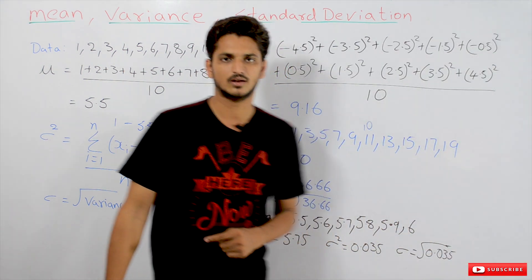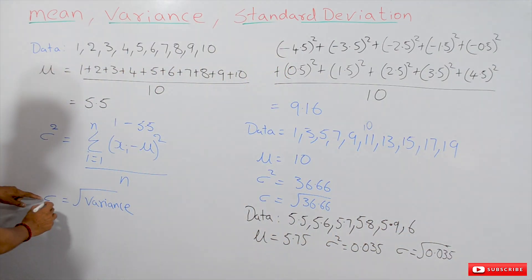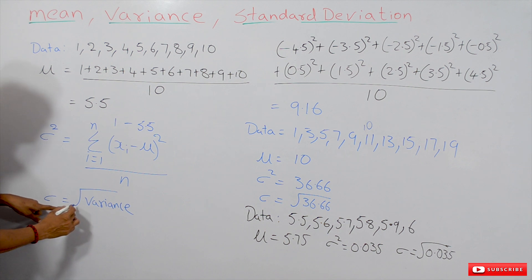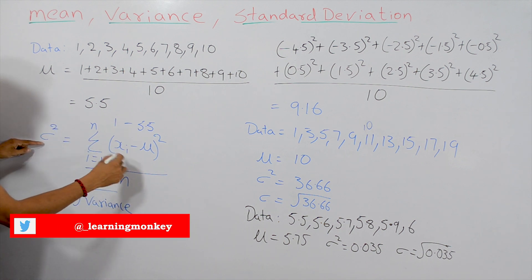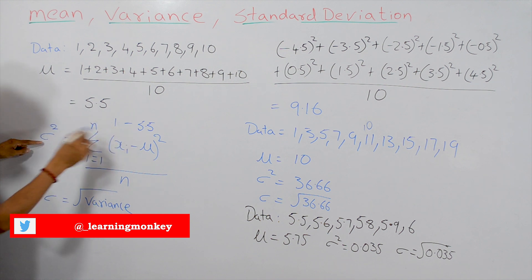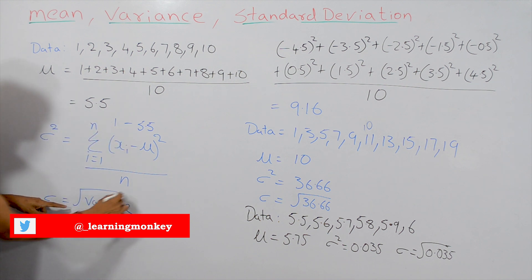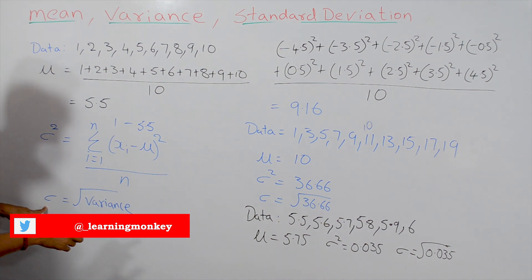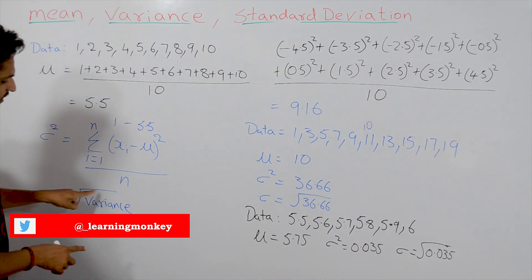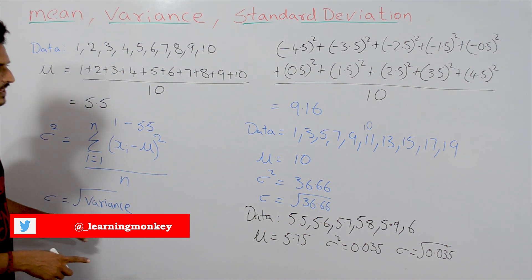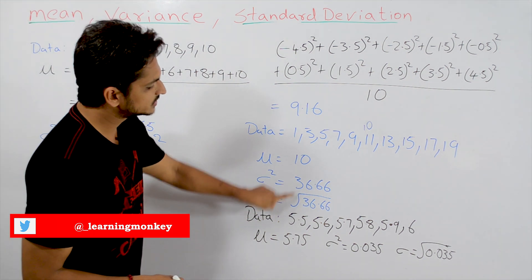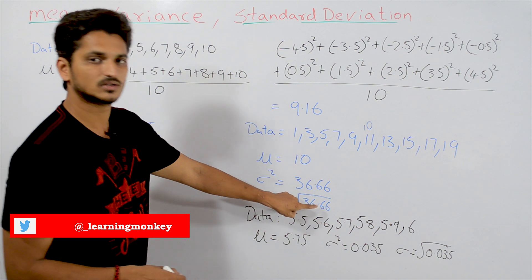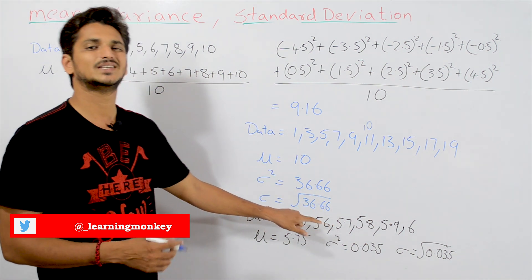Coming to standard deviation: standard deviation is represented by sigma. Sigma equals the square root of variance — since sigma squared equals variance, taking the square root gives us sigma. So for the second dataset, sigma equals the square root of 36.66, which is approximately 6 point something.